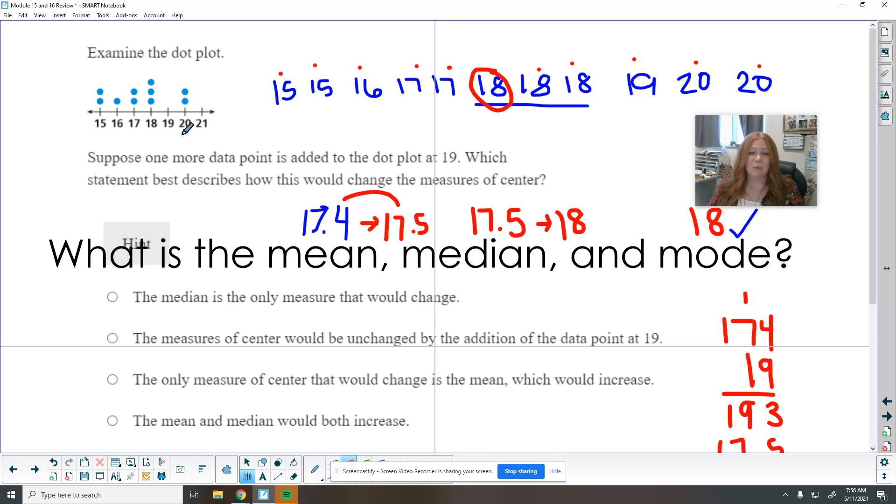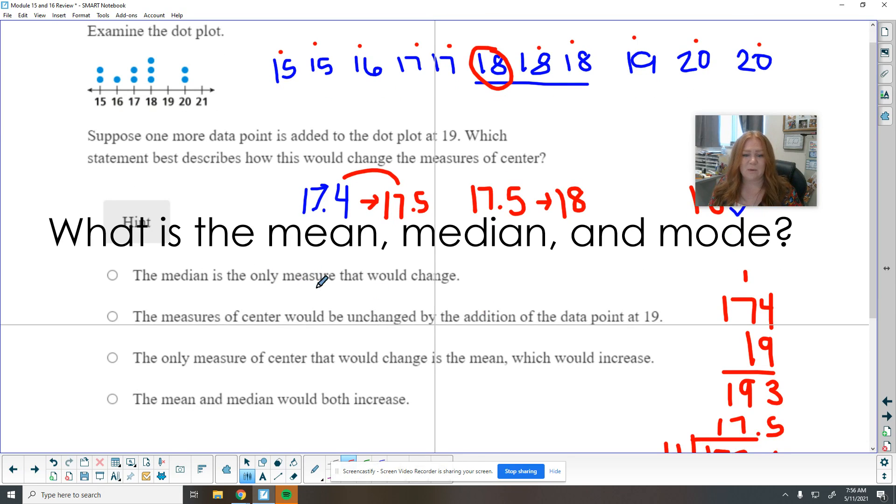It barely shifted the median because it's a number that's pretty close in here. If we would have added a point at like 40, that really would have shifted everything bigger, except for the mode would have stayed the same. But those other numbers would have shifted over because it had to incorporate that number far over. But where this is right kind of in the middle of them, it didn't really change things. So the median is the only measure that would change. So it changed a little, the mean changed a little.